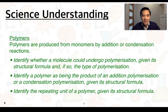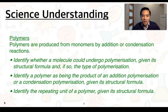We have these understandings. Polymers are produced from monomers by addition or condensation reactions. You need to be able to identify whether a molecule could undergo polymerization given its structural formula and, if so, the type of polymerization. Also identify a polymer as being the product of an addition polymerization or condensation polymerization given its structural formula, and identify the repeating unit of a polymer given its structural formula.